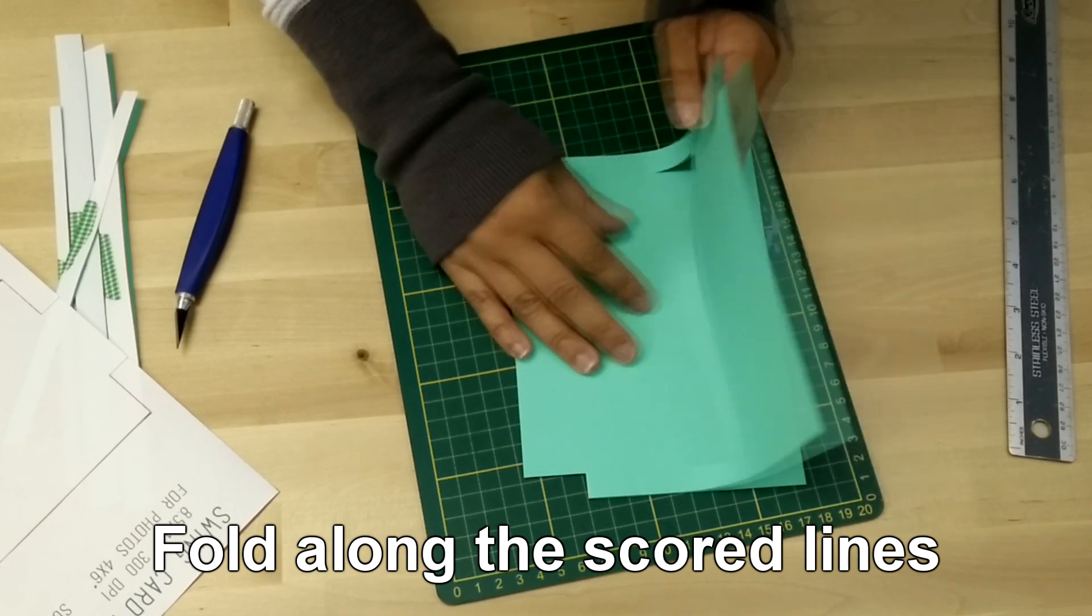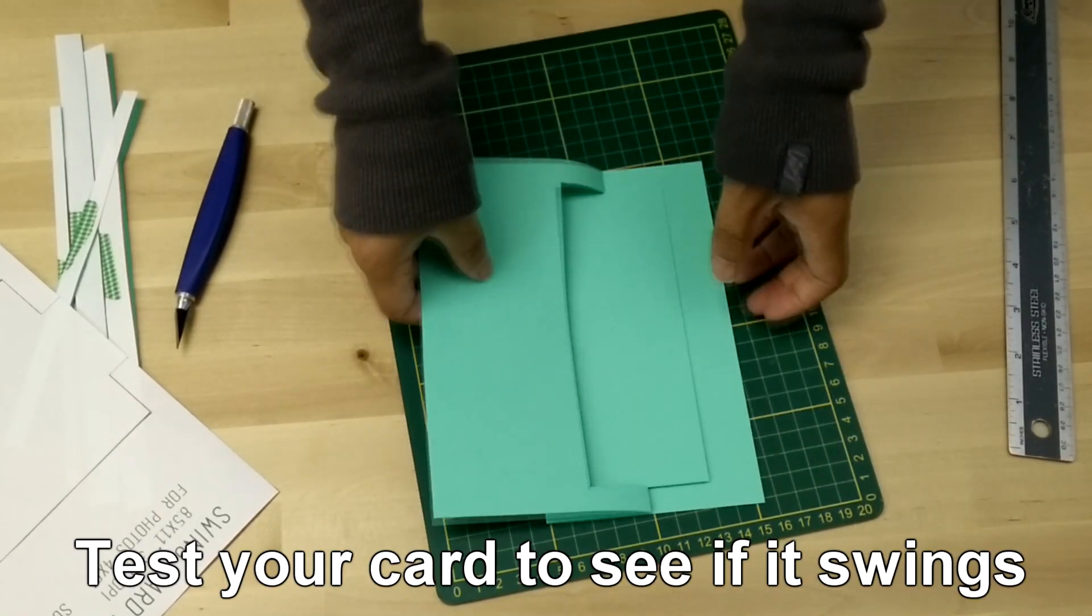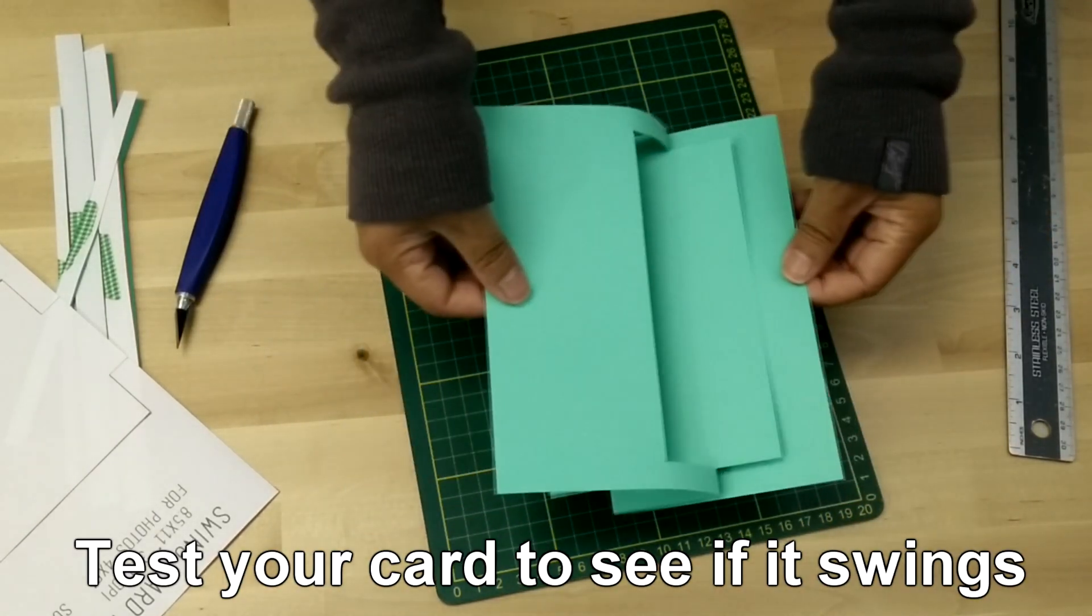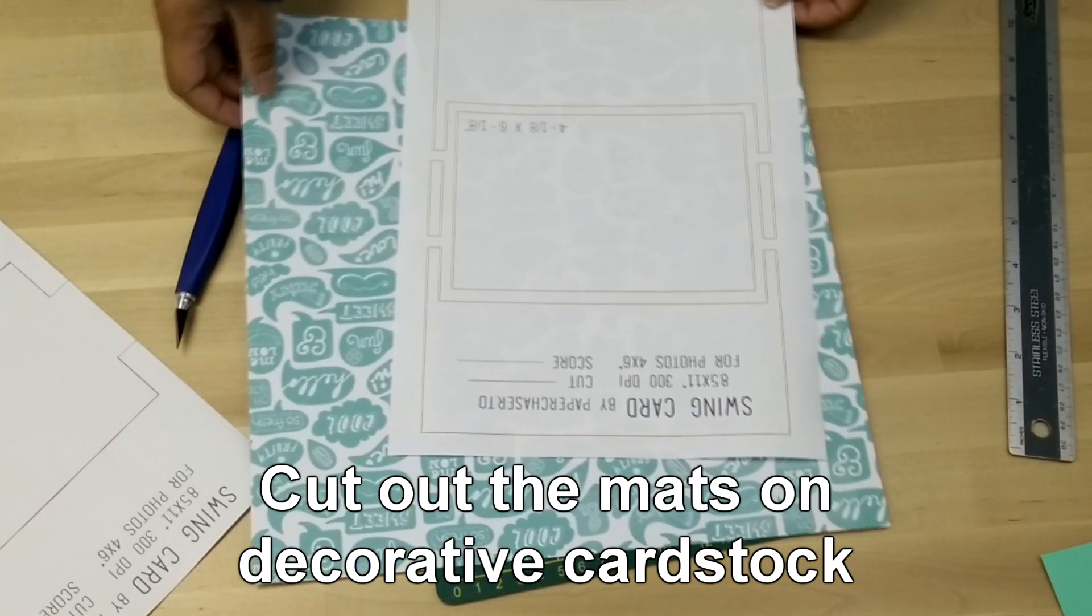Now fold along the scored lines. Give your card a test swing. Right now you can leave the card as is or you can decorate it with some mats. This also strengthens the card.